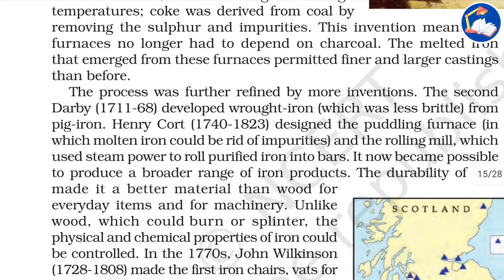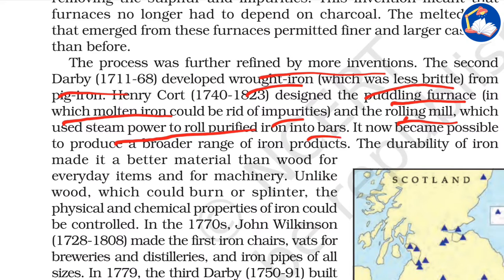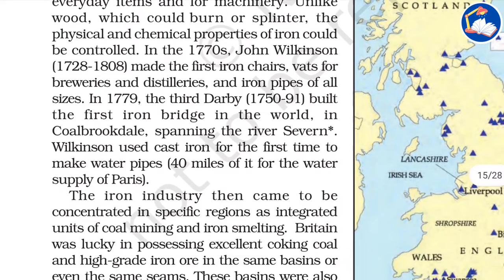The process was further refined by more inventions. The second Darby, the father, developed wrought iron which was much less brittle and stronger. He also designed the puddling furnace, in which molten iron could be rid of impurities, and the rolling mill, which used steam power to roll purified iron into bars. The durability of this iron made it a better material than wood for everyday items and for machinery.